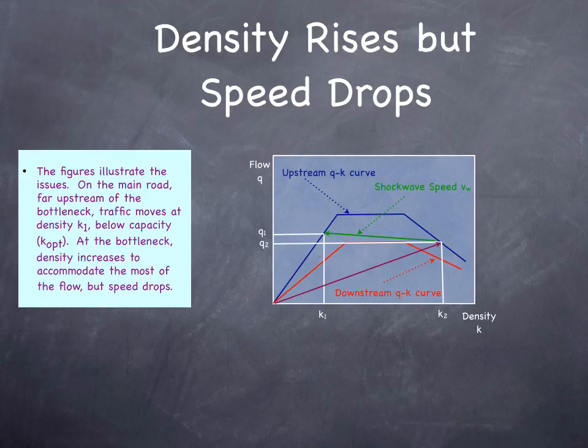Upstream, instead of operating at a density of K1, you're now operating at a density of K2. Now, K2 is significantly higher than K1. And instead of operating at free flow speed, you're operating at this lower speed, determined by the purple line.